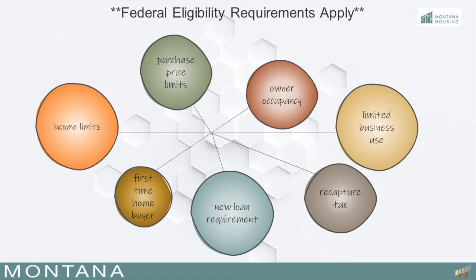Purchase price limits are set by the IRS and change annually. The IRS releases a revenue procedure which contains safe harbor numbers to be used in establishing average area purchase prices for all Montana counties to be used for mortgage loans financed with tax-exempt bonds. The qualified borrowers must occupy the home as their primary residence for the life of the loan. No more than 15% of the total area of the residence may be used in a trade or for business use. Each qualified borrower and any other adult intending to live in the residence must not have had present ownership interest in a principal residence at any time during the three-year period prior to the date on which the mortgage loan is executed.